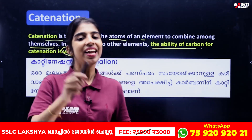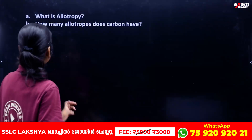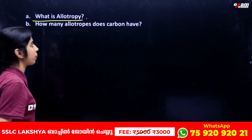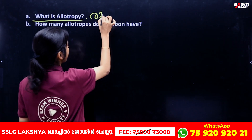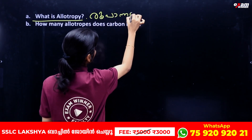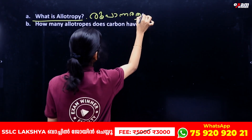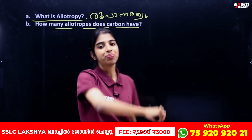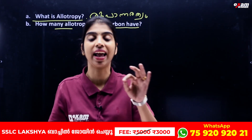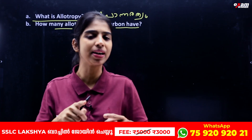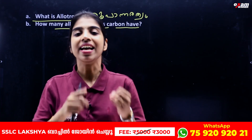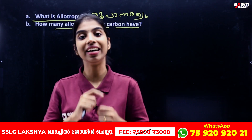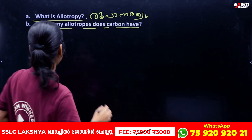The next important question is: What is Allotropy? How many allotropes does carbon have? Carbon's allotropes are Graphite, Diamond, Graphene, and Fullerene.